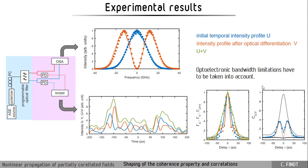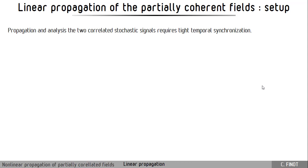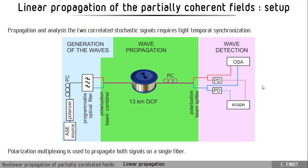So we are able to generate the two fields that are correlated. Now what happens when we propagate these two fields in a dispersive medium? Here we have chosen to make the propagation in a fiber, and the question is: how can we manage to synchronize both signals for the detection? Because here we really need to have temporal synchronization, and we can achieve this synchronization using polarization multiplexing. At the output we are able to isolate the two signals and to detect them independently.